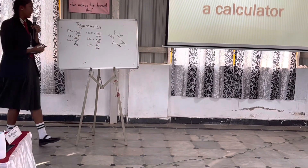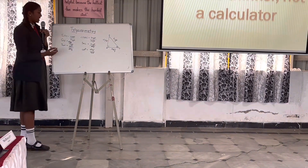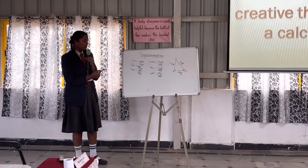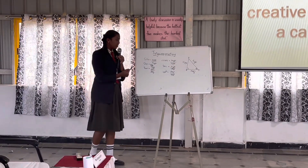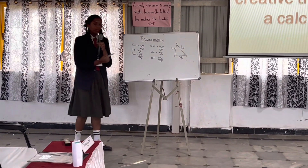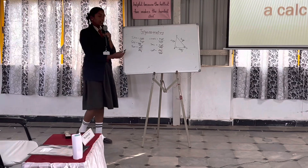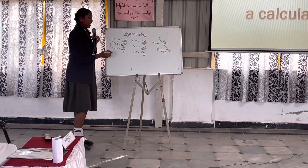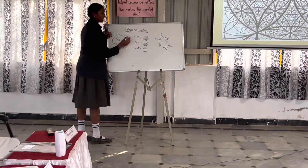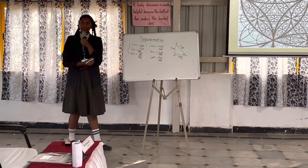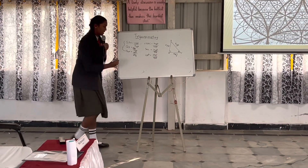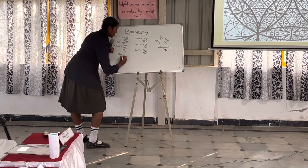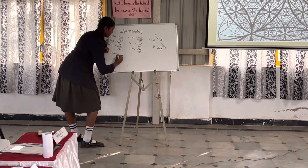Cosecant is the reciprocal of sine, and secant is the reciprocal of cosine, and cotangent is the reciprocal of tangent. We consider sine, cosine, and tangent as the main ratios, and the other three are simply their reciprocals — for example, sine is equal to 1 divided by cosecant.